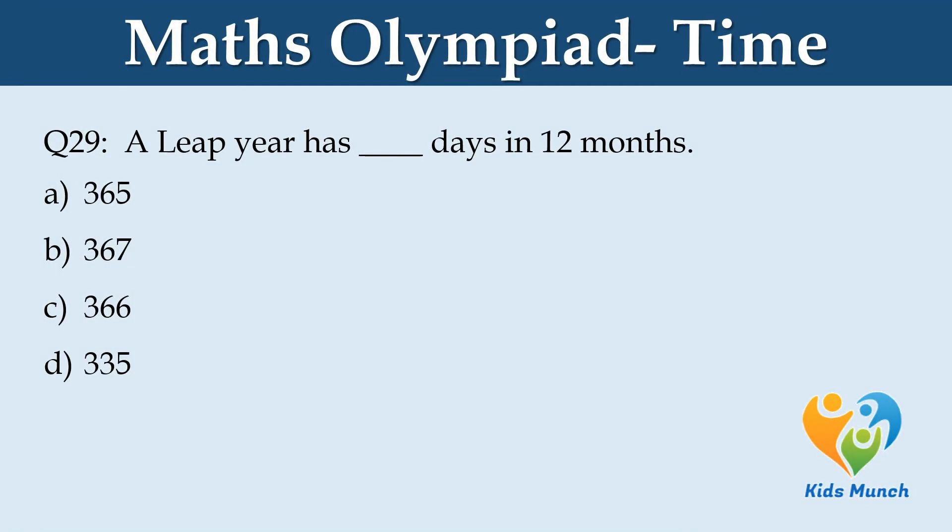A leap year has dash days in 12 months. Option A: 365 days. Option B: 367 days. Option C: 366 days. Option D: 335 days.